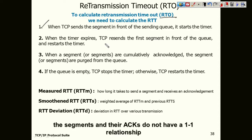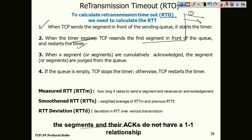Whenever there is no acknowledgement before the expiry of the timer, retransmission is done — the first segment of the queue will be retransmitted. Note that segments and acknowledgements are not in a one-to-one relationship. When you send the first segment you may get a cumulative acknowledgement. For example, you deliver segments one, two, three and receive acknowledgement four — meaning three segments have been received and the fourth is now expected.